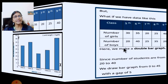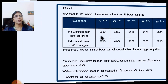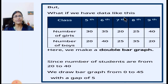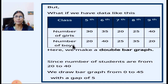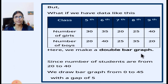But now, if the data are given in this form — where classes are given and you have data of number of girls and number of boys also — how will you represent it? You need to make a double bar graph for it. So today we will learn how to make a double bar graph.